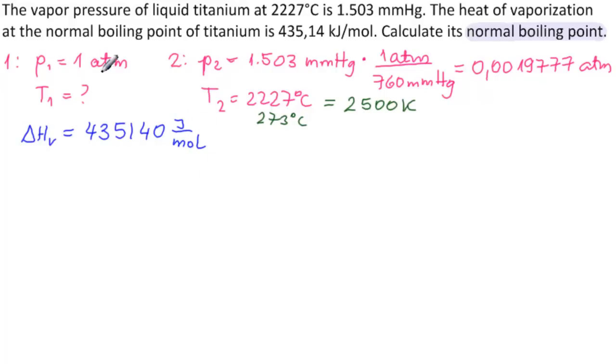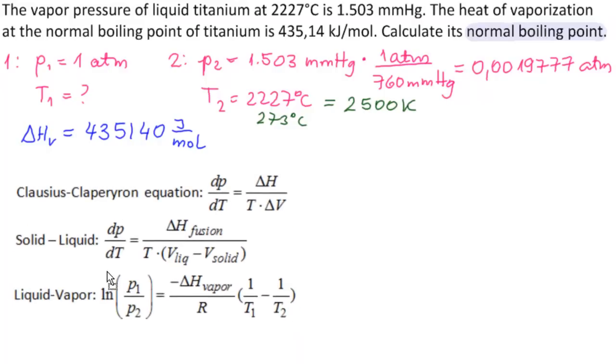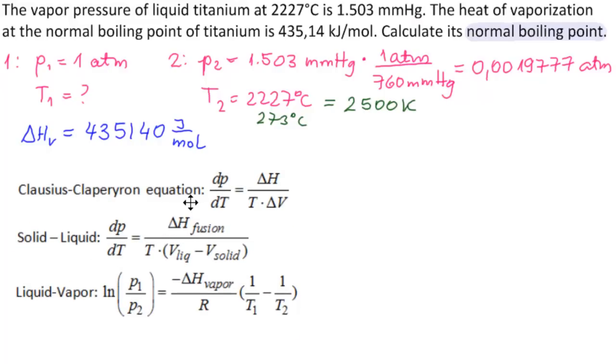So we have four pieces of information, and we're looking for number five. We need a formula that relates these. Notice that we're looking at liquid and vapor. So we're going to be using the Clausius-Clapeyron equations, and we're looking at the vapor liquid one, which is this one right here. And it has exactly everything we need in it, so good to go.